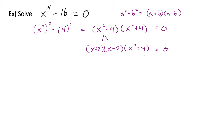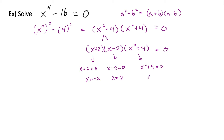And this is all equal to zero. Now that we've factored as much as we can, we can solve for x. We see x plus two equals zero, so x could be negative two. And x minus two equals zero, so x could be positive two. For x squared plus four equals zero, we get x squared equals negative four, which gives no real solutions, so we ignore that part. Our solutions are x equals negative two and x equals positive two.